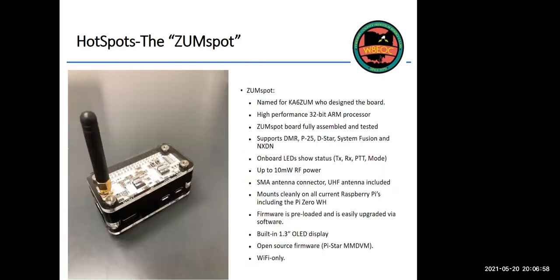The Zoom Spot is a more high-performance device and the predecessor to the low-cost China Spot. The designer, KA6ZUM, wanted to get the price point below $90. It boots quickly, gives you a lot of options, and came with preloaded configurable software to make it easier for users to configure. It was only available on Wi-Fi, which made initial setup a little tricky. Still a good find if you can locate one.